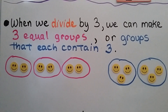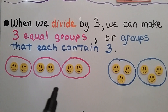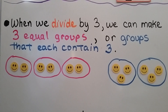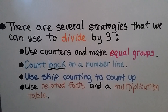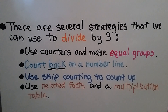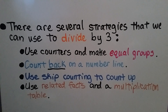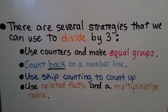When we divide by 3, we can make 3 equal groups, or groups that each contain 3. There are several strategies that we can use to divide by 3. We can use counters and make equal groups. We can count back on a number line. We can use skip counting to count up. And we can use related facts and a multiplication table.